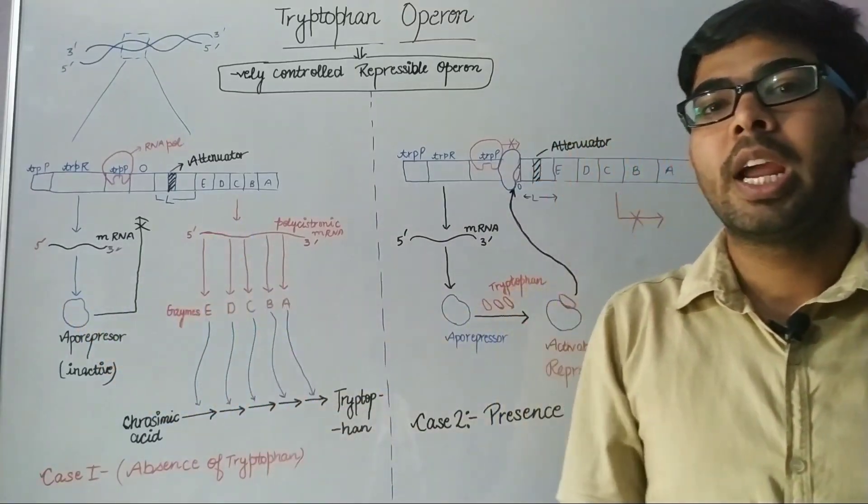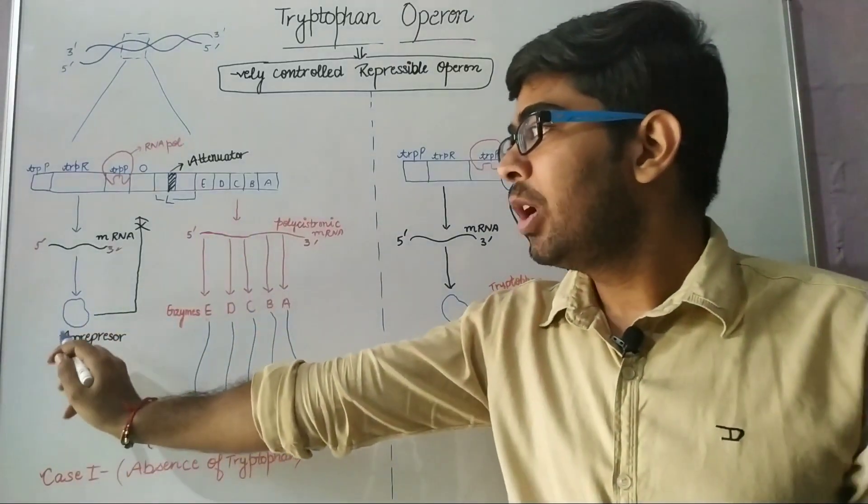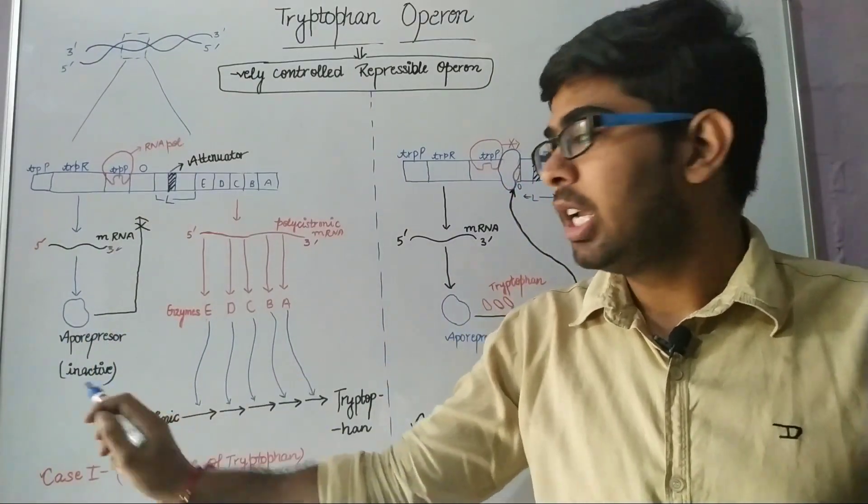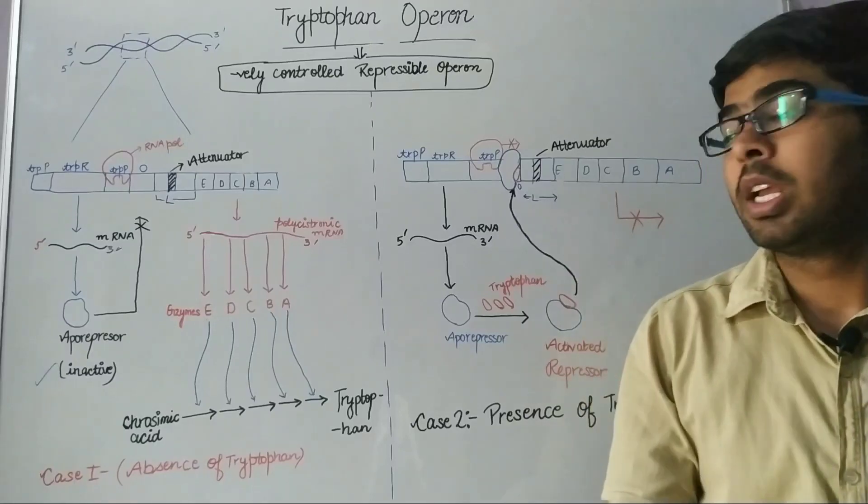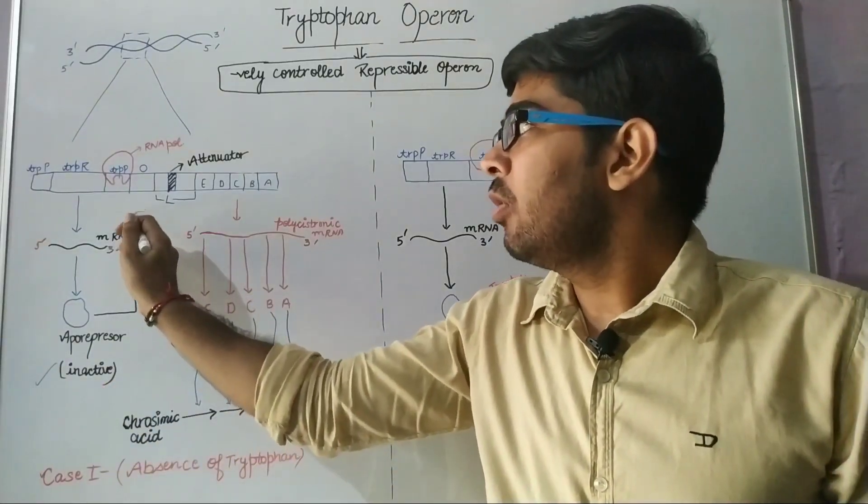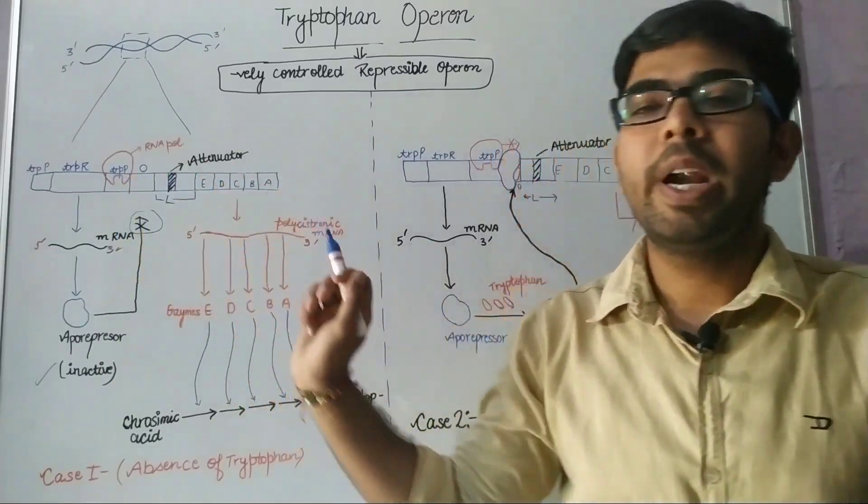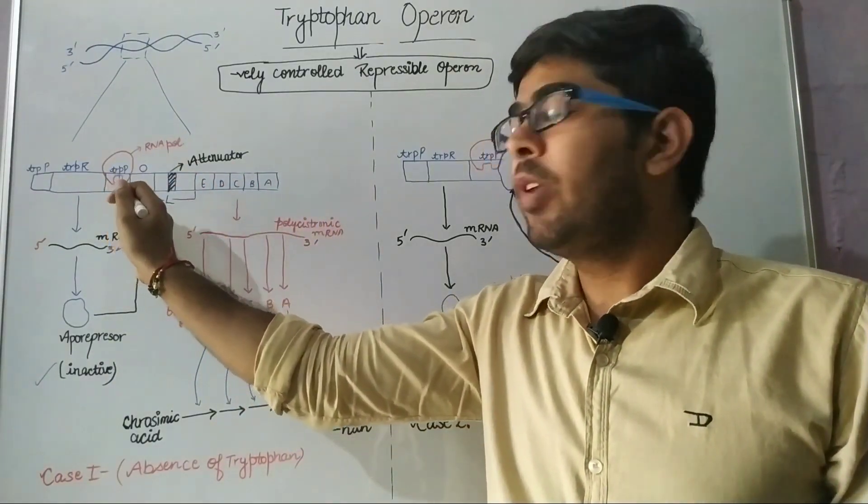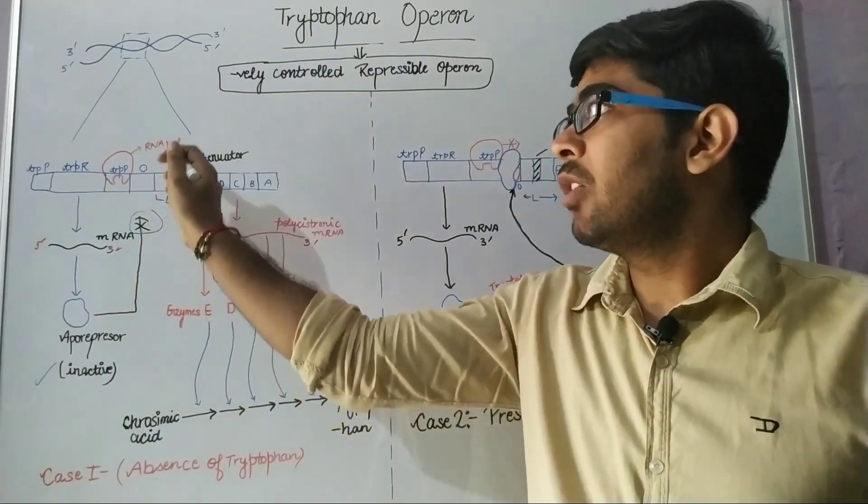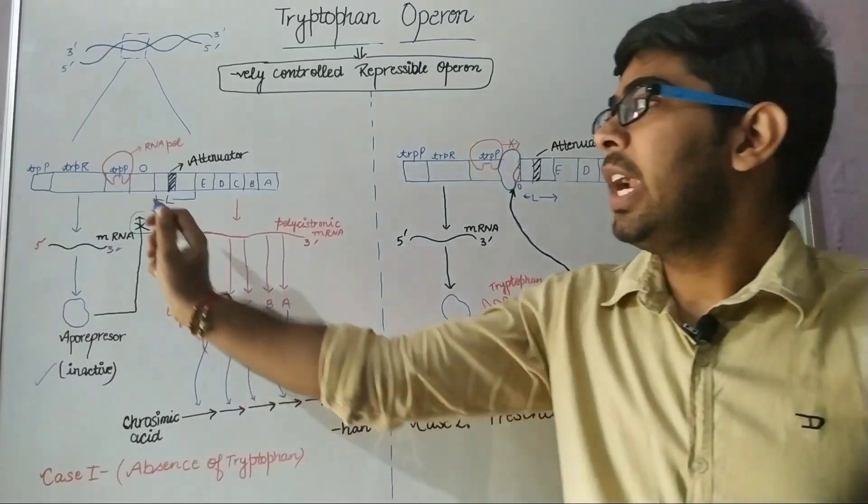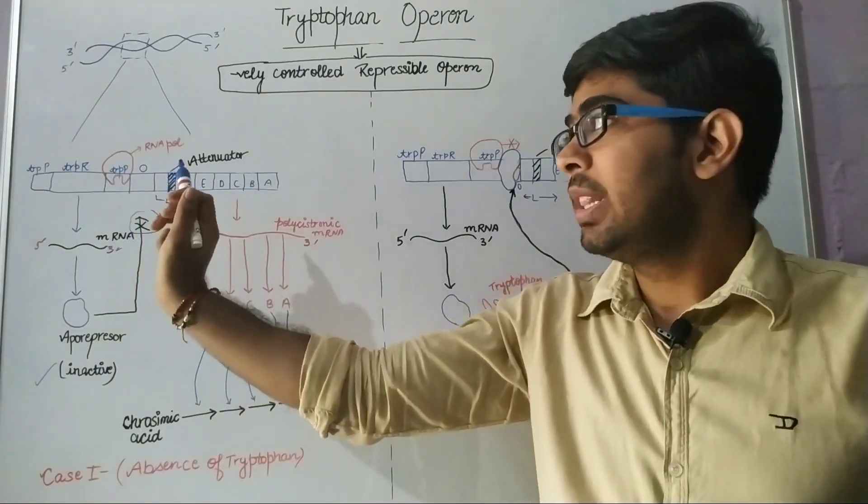This mRNA undergoes translation and produces aporepressor protein. This aporepressor protein is in inactive form, that's why the aporepressor cannot bind to the operator region.